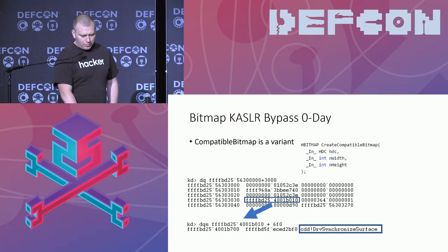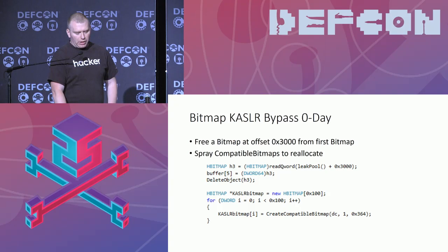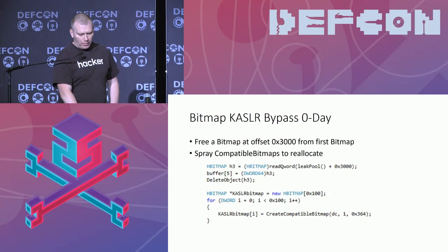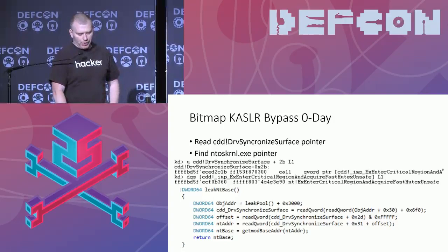So how do we do this in the exploit? We know where the first bitmap was at — we found that address, so we go to offset 3000, free this bitmap, then reallocate it with a compatible bitmap, spraying a couple hundred of these to make sure one of them is reallocated in the same spot. Once that is done, we read out the pointer for the kernel driver. The reason I took this specific function is that it actually contains a call at offset 0x2b into the NT kernel. So from this, it's very easy to read out the NT kernel pointer and then use the read primitive to find the base address of the NT driver. In this way, we have a generic bypass to find the NT kernel using the bitmap primitive.